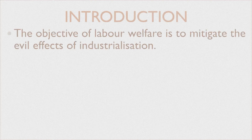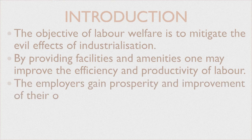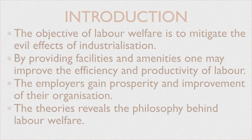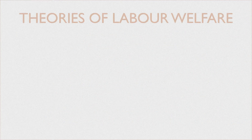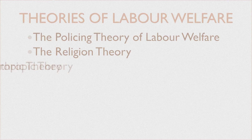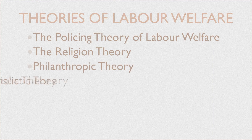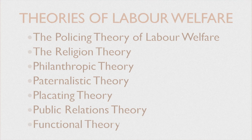There are different approaches, and the objective of labor welfare is to mitigate the evil effects of industrialization by providing facilities and amenities. One may improve the efficiency and productivity of labor, and employers gain prosperity and improvement of their organization. These theories reveal the philosophy behind labor welfare. There are seven theories: the policing theory, the religion theory, the philanthropic theory, the paternalistic theory, the placating theory, the public relations theory, and the functional theory.